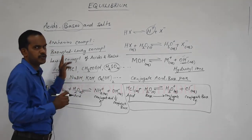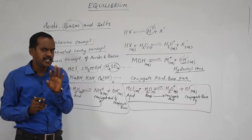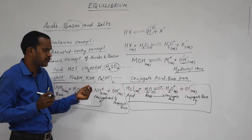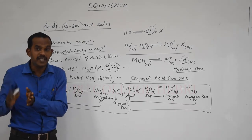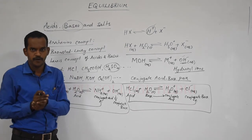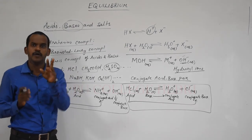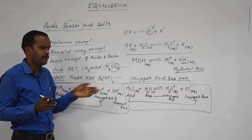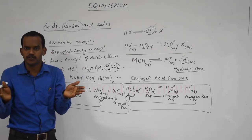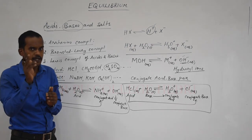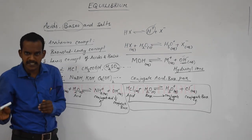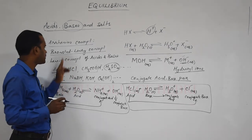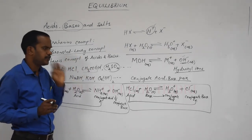In the Bronsted-Lowry concept, remember two things: what is acid and base, and what is a conjugate acid-base pair. Another important point: in a conjugate acid-base pair, if the conjugate base is weak, the acid will be strongest, and vice versa. If the conjugate base is the weakest, the corresponding acid will be the strongest. This type of question may come in competitive exams — two ions will be given, and you compare strength based on this relationship.